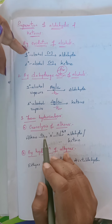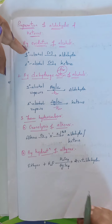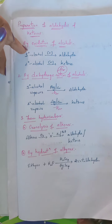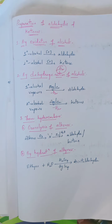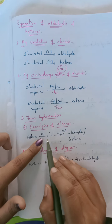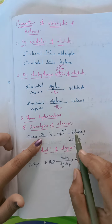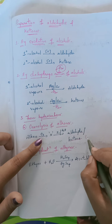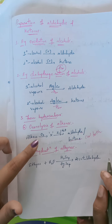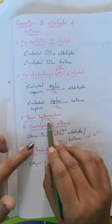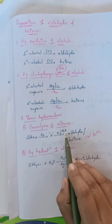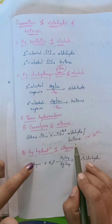The third common method is from hydrocarbons — hydrocarbons can be converted into corresponding aldehydes or ketones. The first example is ozonolysis of alkenes, which we studied in first year. When an alkene undergoes ozonolysis followed by reaction with zinc and water, it can be converted into an aldehyde or ketone or both — sometimes a mixture of both is obtained.